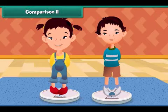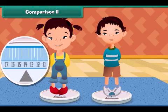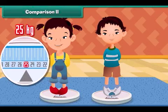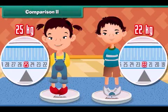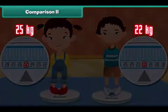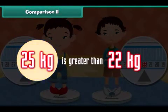Two children measure their weight. The weight of the first child is 25 kilograms and the weight of the second child is 22 kilograms. It is right to say that the weight of the first child is greater than the second one.